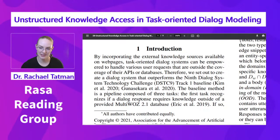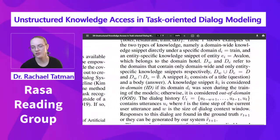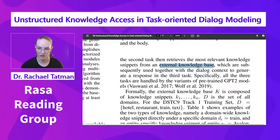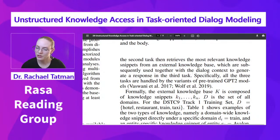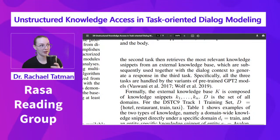The baseline method is a pipeline composed of three tasks. The first task recognizes if a dialogue response requires knowledge outside of a provided MultiWOZ 2.1 dataset — MultiWOZ is just a conversational example dataset. If so, the second task retrieves the most relevant knowledge snippets from an external knowledge base, which are subsequently used together with the dialogue context to generate a response in the third task. All three tasks in the baseline are handled by variants of the pre-trained GPT-2 model.